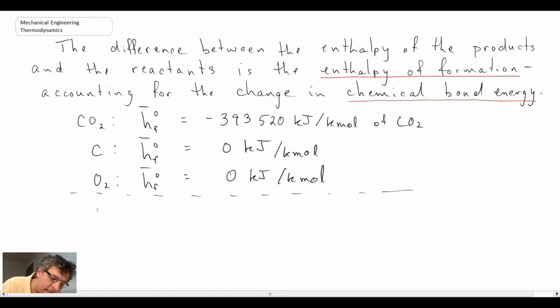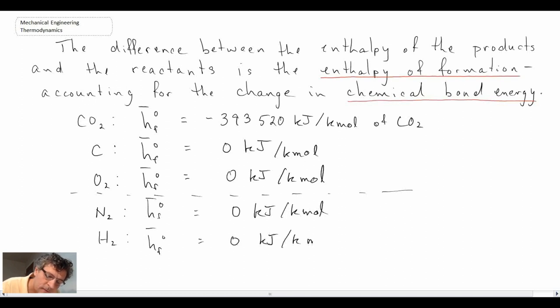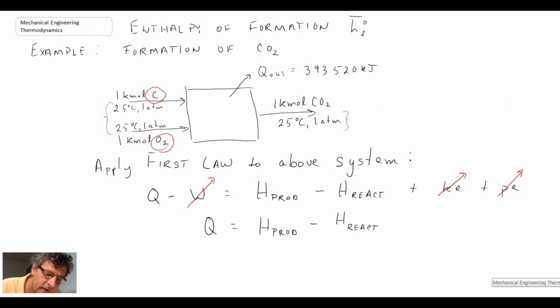If you look in the table, you'll also find that for diatomic nitrogen and hydrogen, their enthalpy of formation is also zero kilojoules per kilomole. This means the process we were looking at — elemental carbon reacting with oxygen — is an oxidation reaction, and it characterizes the combustion of carbon into carbon dioxide. When you go through that combustion process, you have a heat release, as noted by the heat coming out in our schematic.